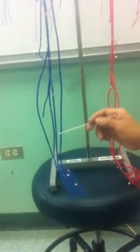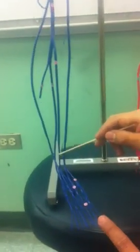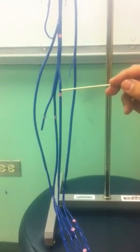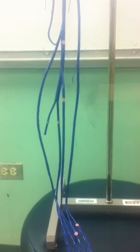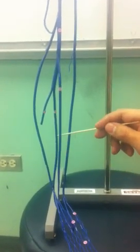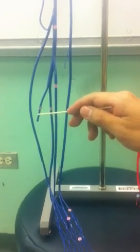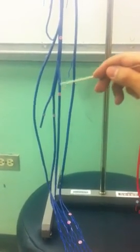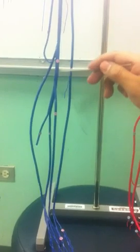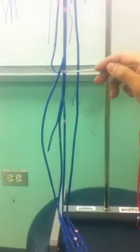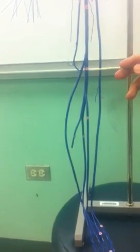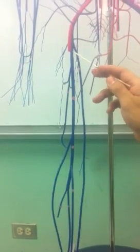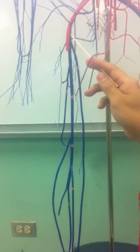Now let's look at some deeper veins. A deeper vein is this one coming up along the front of the leg — this is the anterior tibial vein. Then here you have the posterior tibial vein, and here the fibular vein. These three veins come together to form the popliteal vein, which is located behind the knee. Around this level, we form the femoral vein — the very important femoral vein.